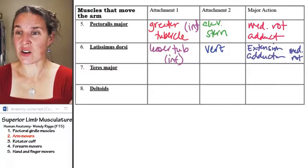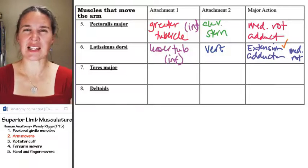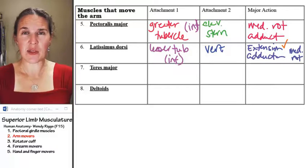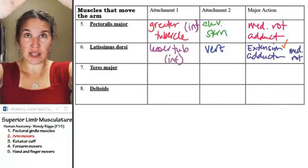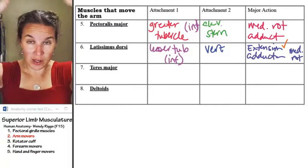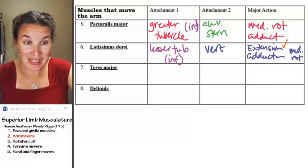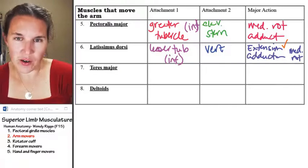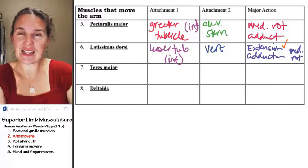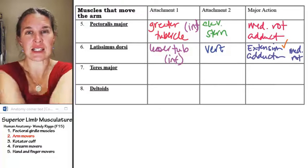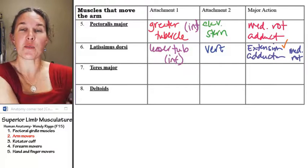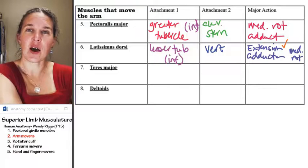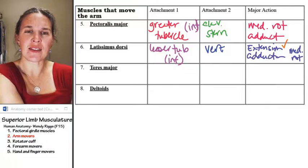The lats are called swimmer's muscles because think about the butterfly stroke and how your hands go up. You butterfly. And then you do this massive extension of your humerus to pull all the water and swim forward. That extension is latissimus. You can grab latissimus. It's the posterior portion of your armpit.